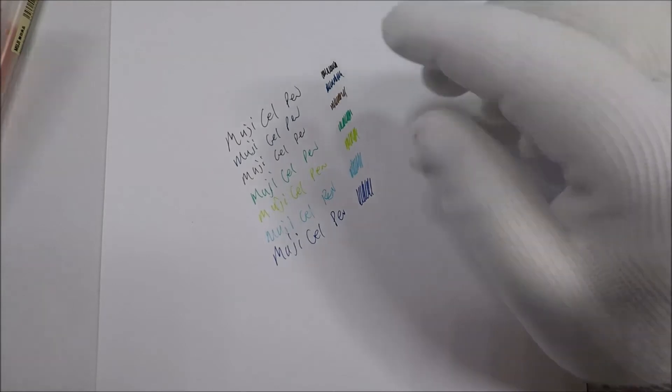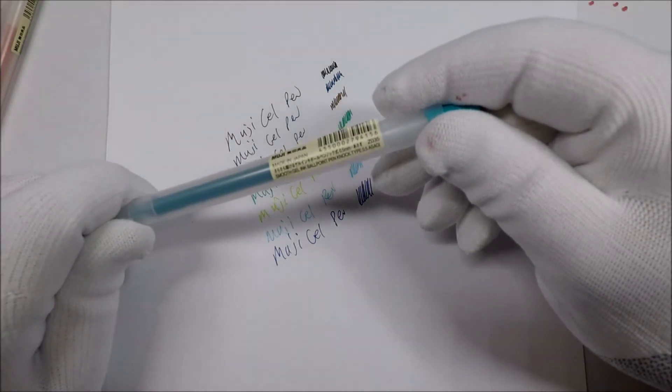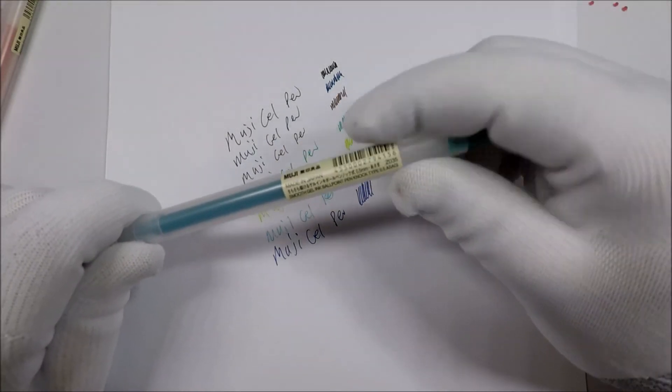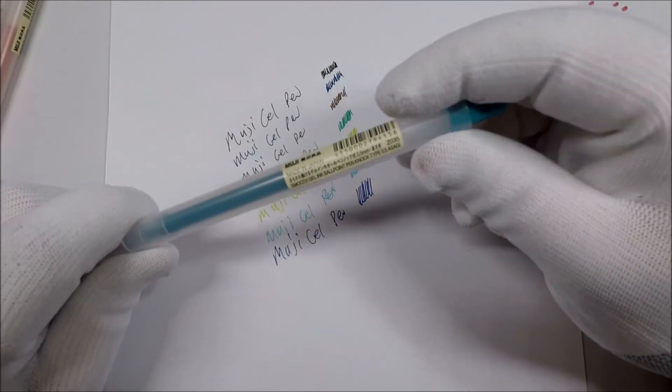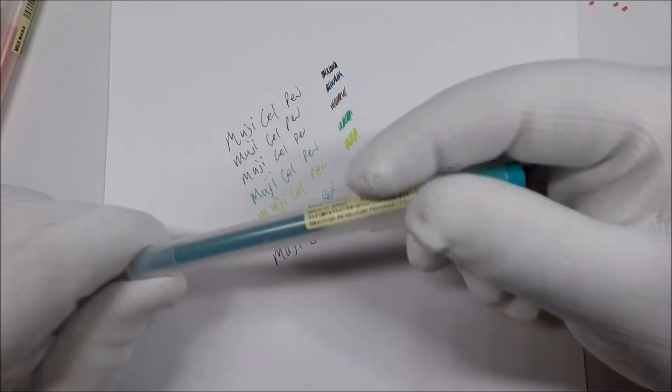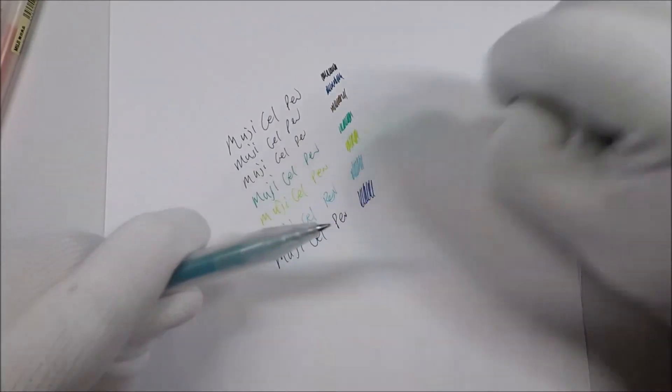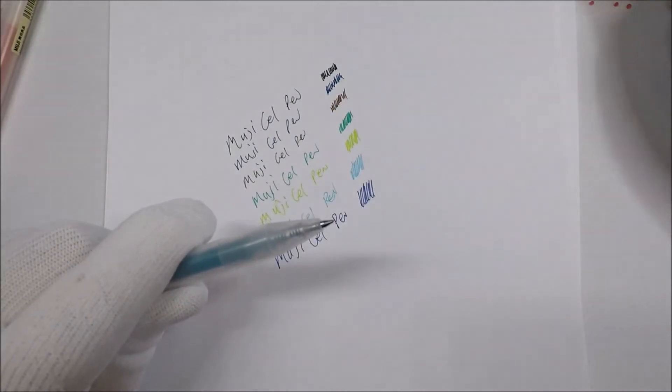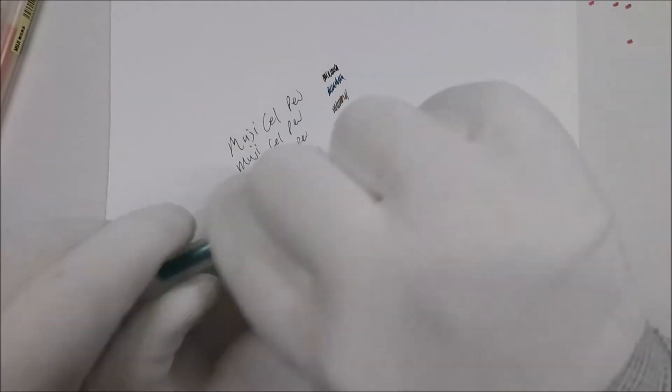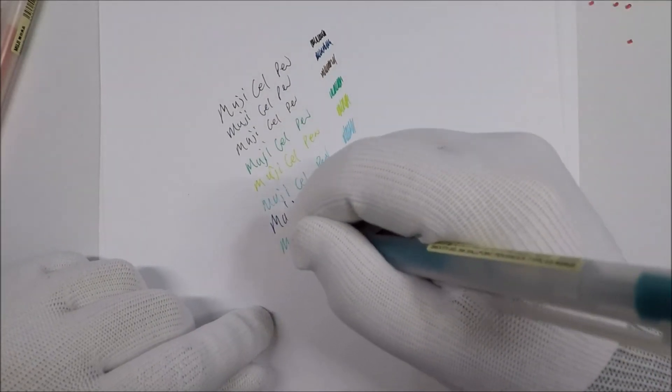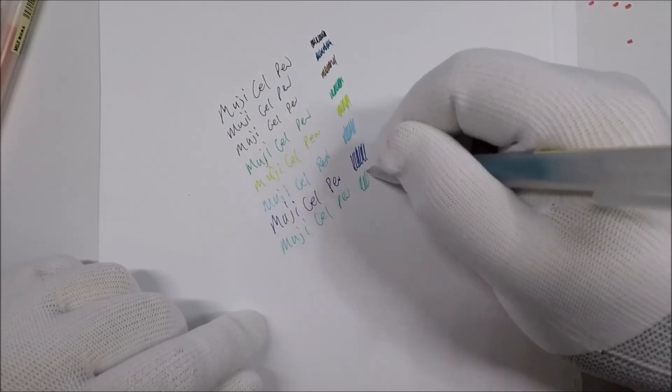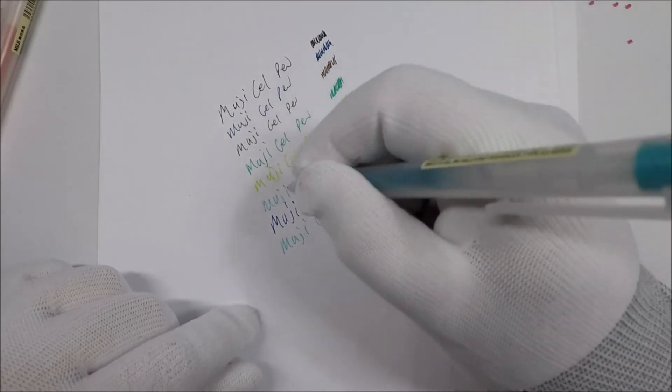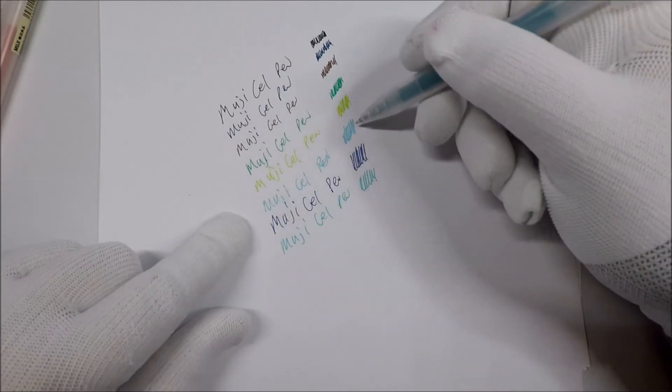We got maybe teal. This just says Asagi. I'm not sure what Asagi is. On the little color thing it says light green slash blue. Muji gel pen. It looks very similar to this one here, these two look a lot alike.